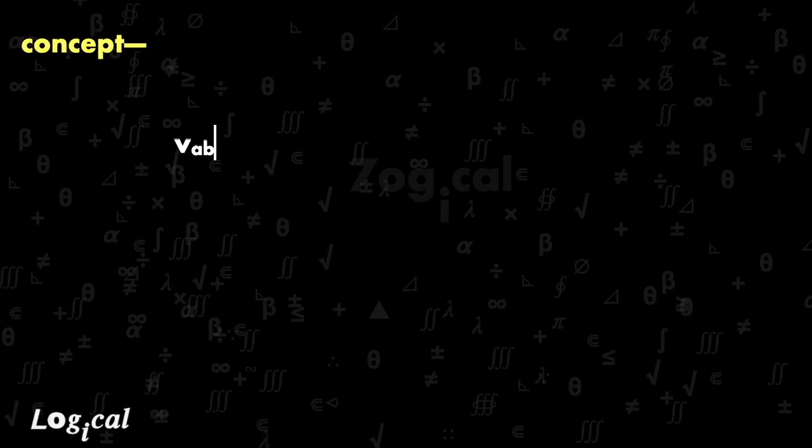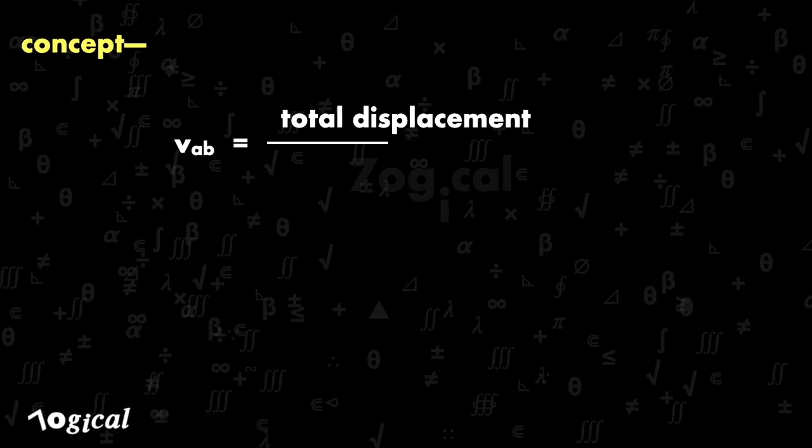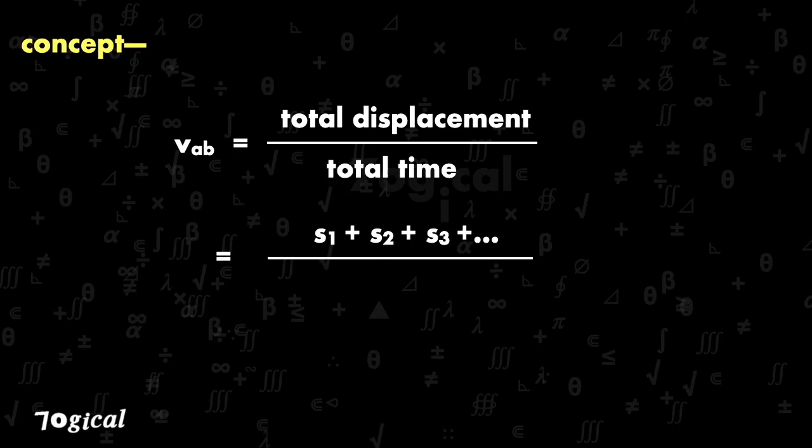The concept is, as we know, average velocity is equal to total displacement upon total time: v_avg = (s1 + s2 + s3 + ...) / (t1 + t2 + t3 + ...).